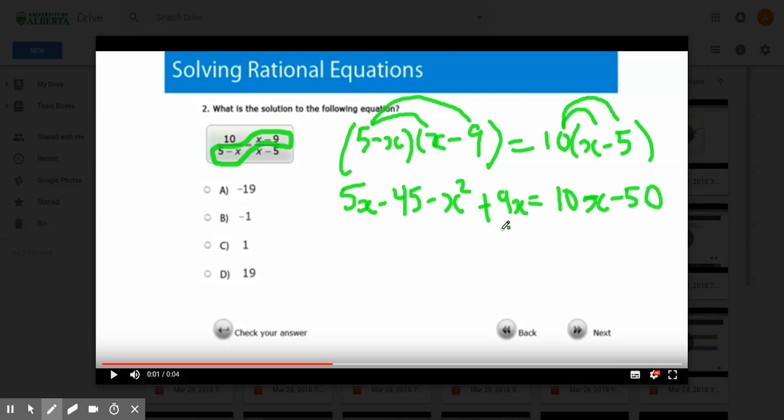Now I'm going to collect like terms on this side. I'm going to get 14x minus 45 minus x squared equals 10x minus 50.